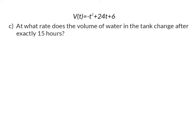Question C: At what rate does the volume of water in the tank change after exactly 15 hours? Again, we are going to use our derivative equation because we want the rate of change, but this time we substitute t with 15. Here we get an answer of minus 6 liters per hour, and the negative value indicates that the volume of water in the tank is decreasing by 6 liters per hour.